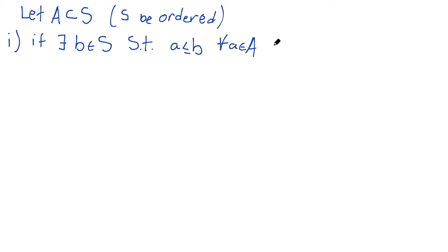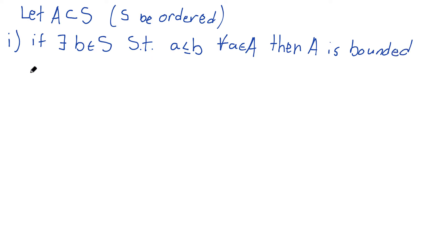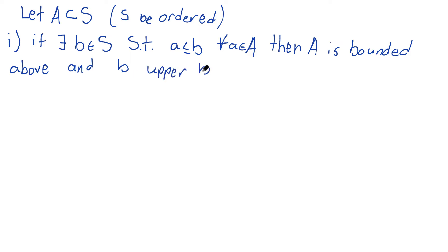Then we'll say A is bounded above, which makes sense. If nothing from A can exceed little B, then it's bounded — that's what it means. And we can call this little B an upper bound, bounded from above. So very intuitive. This is just what it means mathematically.